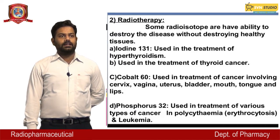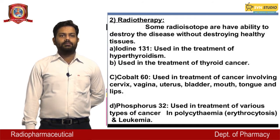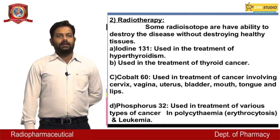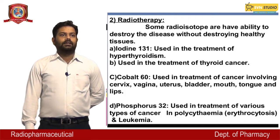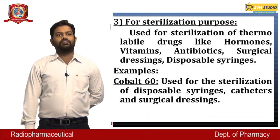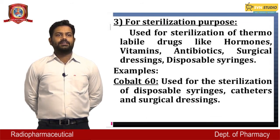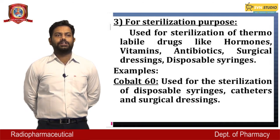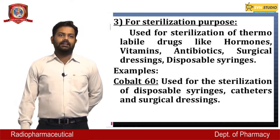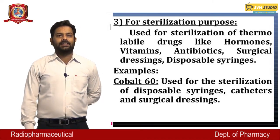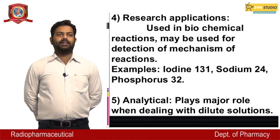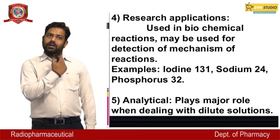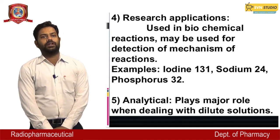Cobalt-60 is used in treatment of cancer involving cervix, vagina, uterus, bladder, mouth, tongue, and lips. Phosphorus-32 is used in treatment of polycythemia (erythrocytosis) and leukemia. For sterilization, radiopharmaceuticals are used for thermolabile drugs like hormones, vitamins, antibiotics, surgical dressings, and disposable syringes — for example, cobalt-60 for sterilization of disposable syringes, catheters, and surgical dressings. For research applications, radioisotopes are used in biochemical reactions; examples include sodium-131, sodium-24, and phosphorus-32.